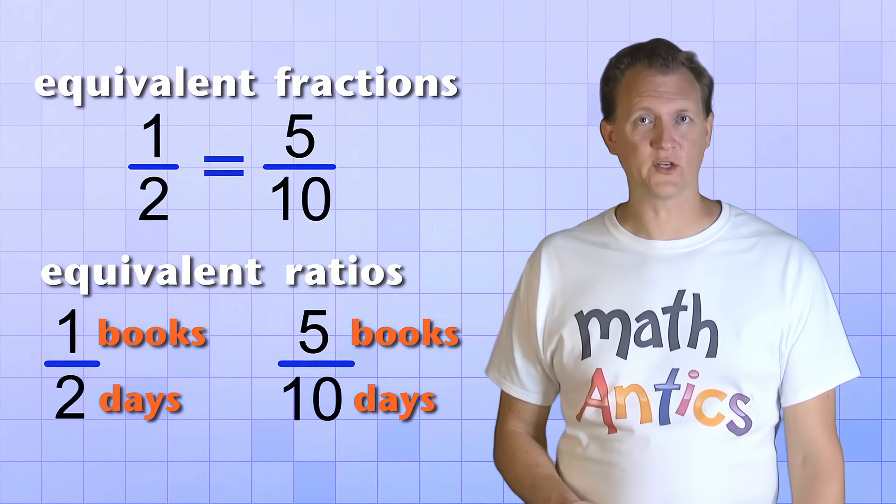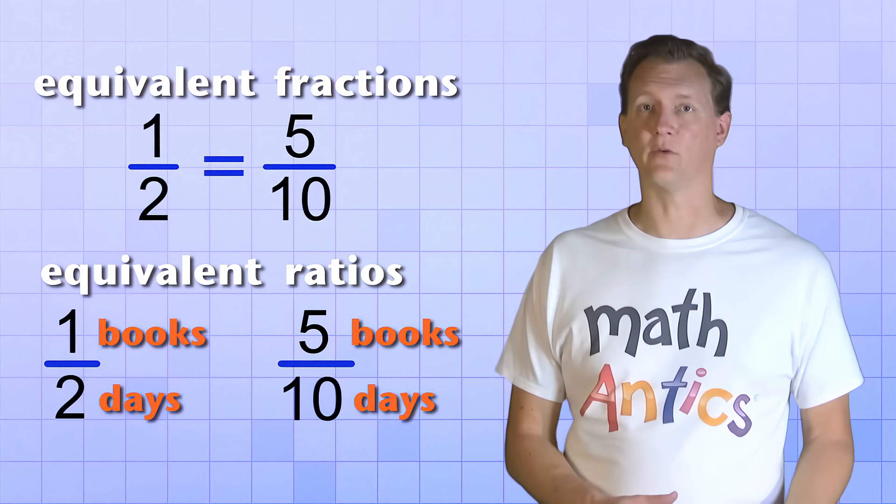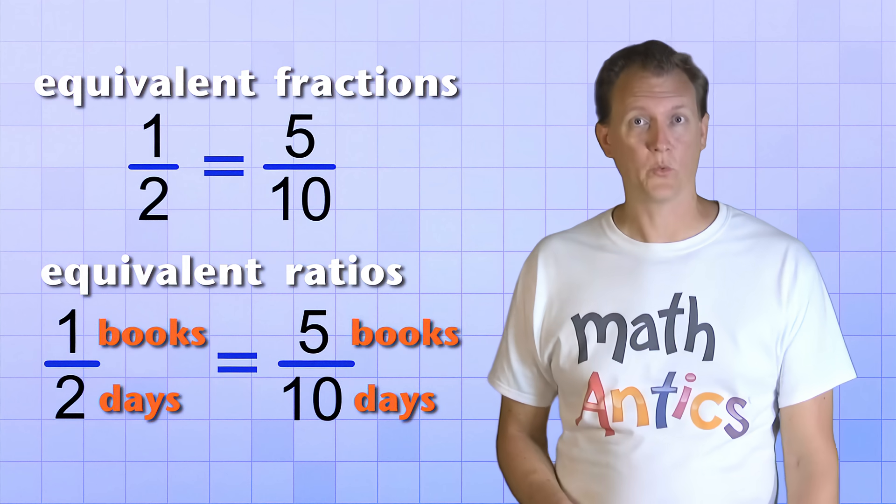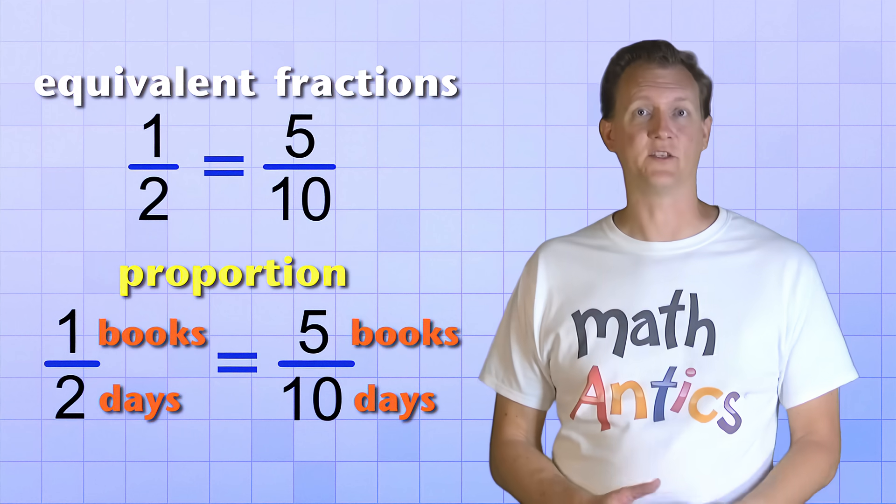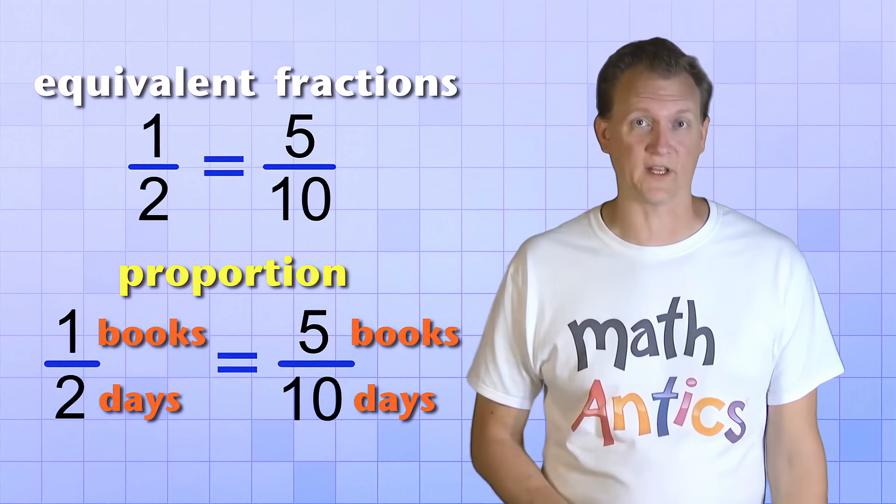Just like the equivalent fractions, they represent the same amount, so we can put an equal sign between them. When we do that, we have a proportion. A proportion is just two ratios that are equivalent or equal.